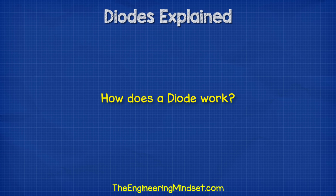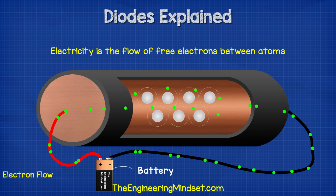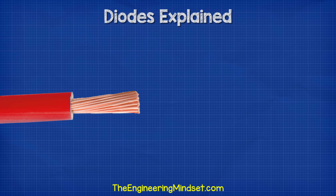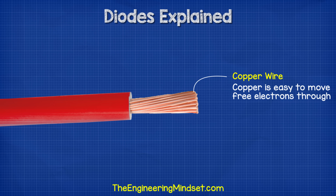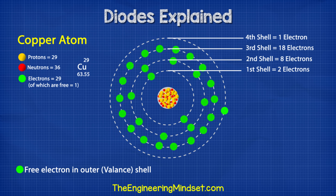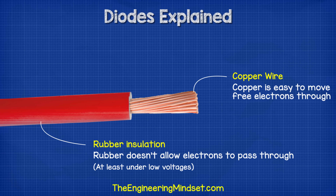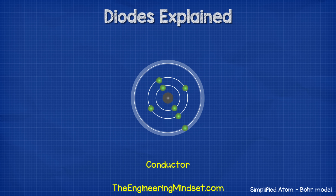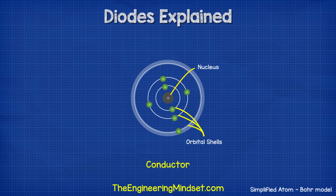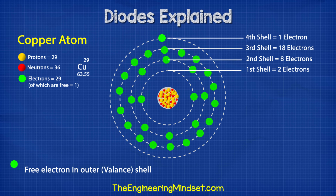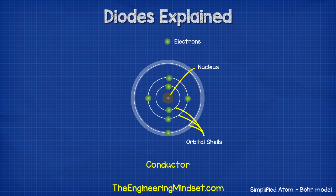So how does the diode work? Electricity is the flow of free electrons between atoms. We use copper wires because copper has a lot of free electrons, making it very easy to pass electricity through. We use rubber to insulate the copper wires because rubber is an insulator — its electrons are held very tightly and can't move between atoms. If we look at the basic model of an atom for a metal conductor, we have the nucleus at the center surrounded by orbital shells which hold the electrons. Each shell holds a maximum number of electrons and an electron must have a certain amount of energy to be accepted into each shell.